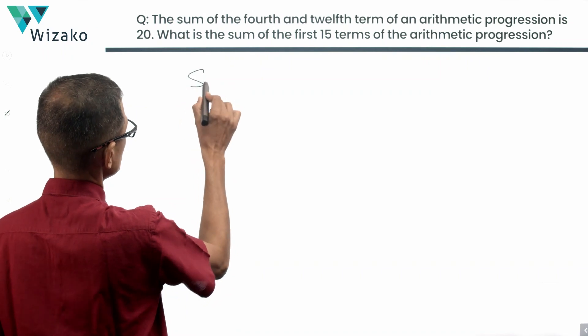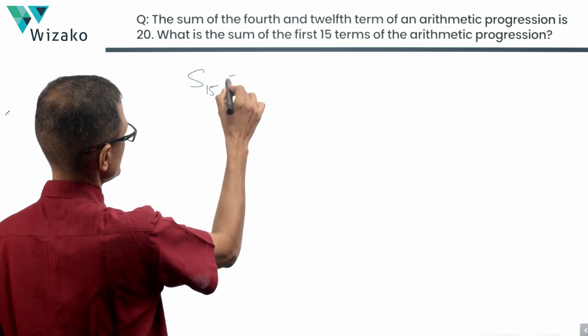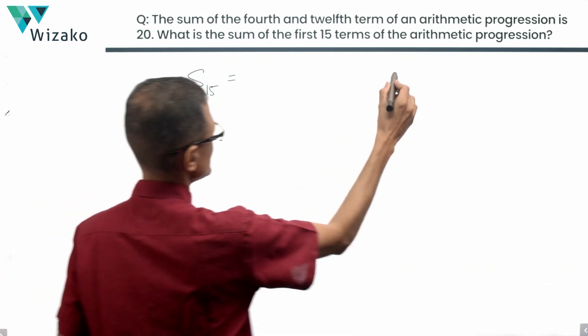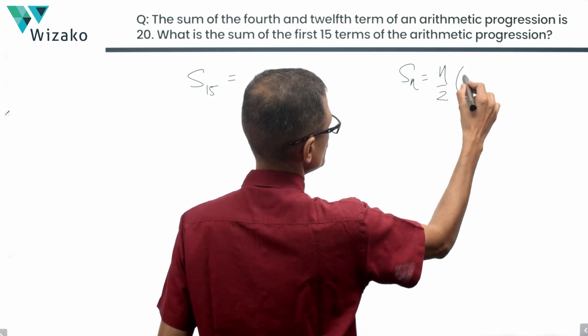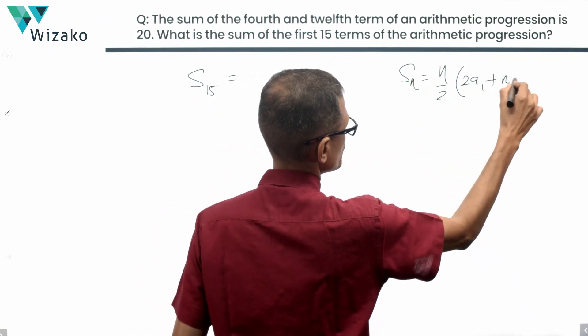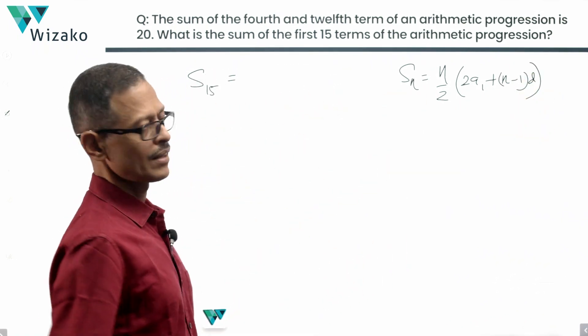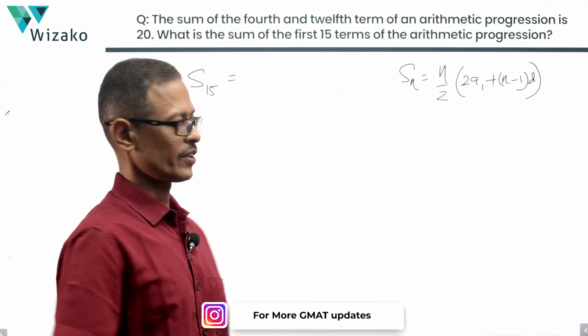So the first 15 terms, therefore we'll call it as S15 is equal to, SN, we'll write it and then deduce it to S15, N by 2 into 2A1 plus N minus 1 times common difference is the sum of the first N terms of an arithmetic progression.